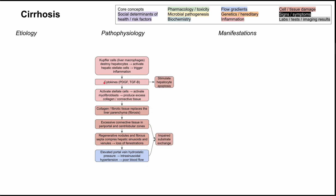When you have all these cytokines that can stimulate hepatocyte apoptosis, that can further worsen things. All of this extra connective tissue creates a mass effect that, on top of the poor blood flow, leads to impaired substrate exchange. All of this leads to loss of exocrine and metabolic functions of the liver.